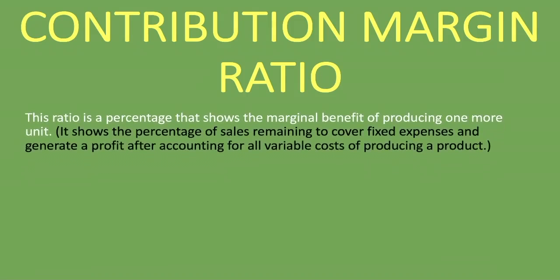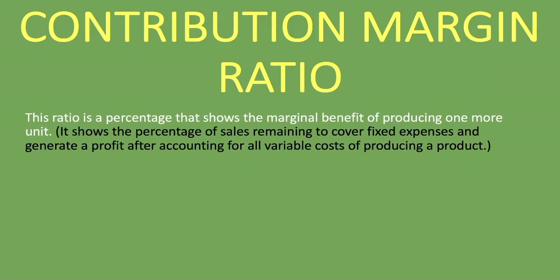So what is this ratio? This ratio is a percentage that shows the marginal benefit of producing one more unit. In other words, it shows the percentage of sales remaining to cover fixed expenses and generate a profit after accounting for all variable costs of producing a product.